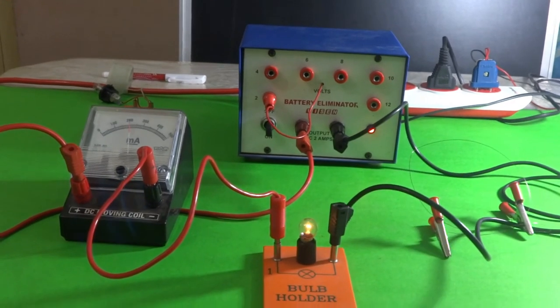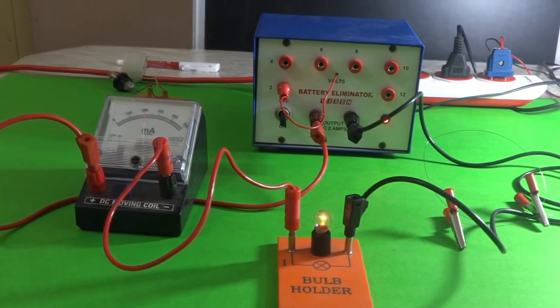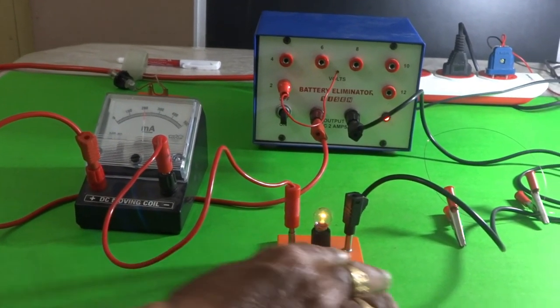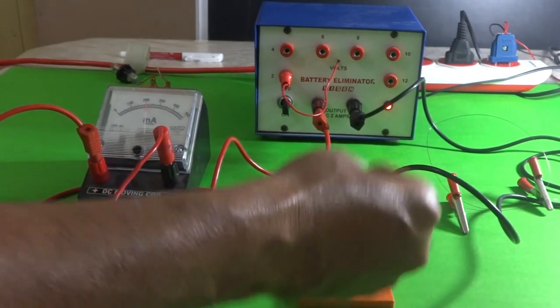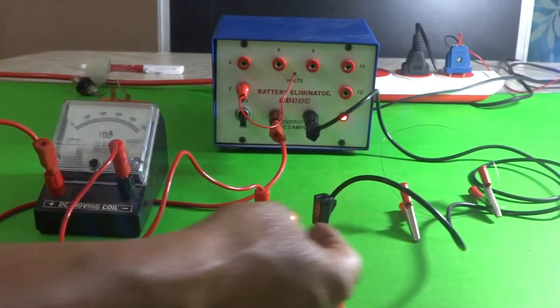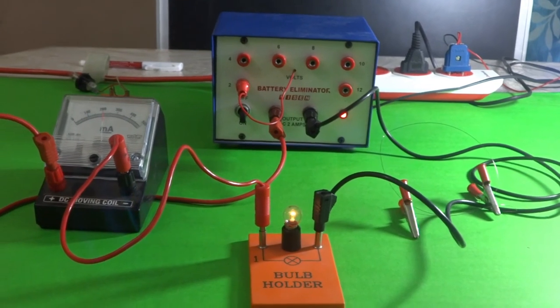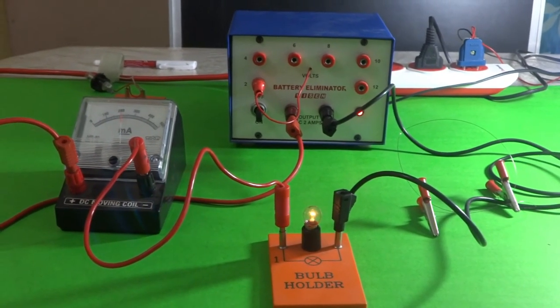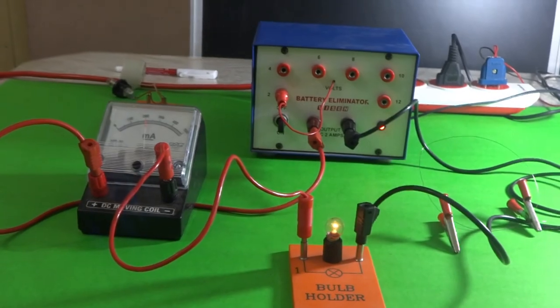In the case of this bulb, it is 200 mA. Therefore, it allows somewhat less current than the wire. And in the very first bulb, it was 90 mA only.